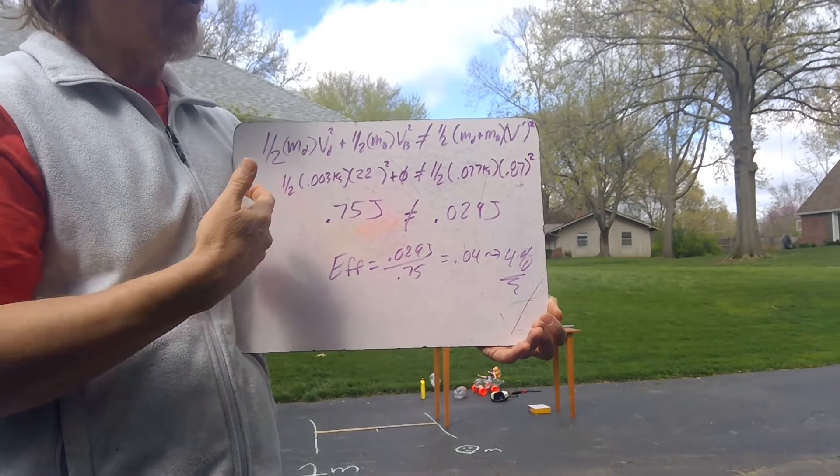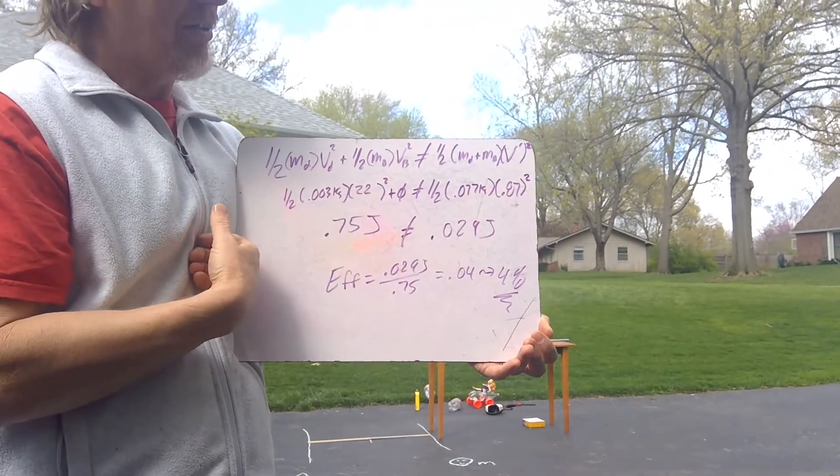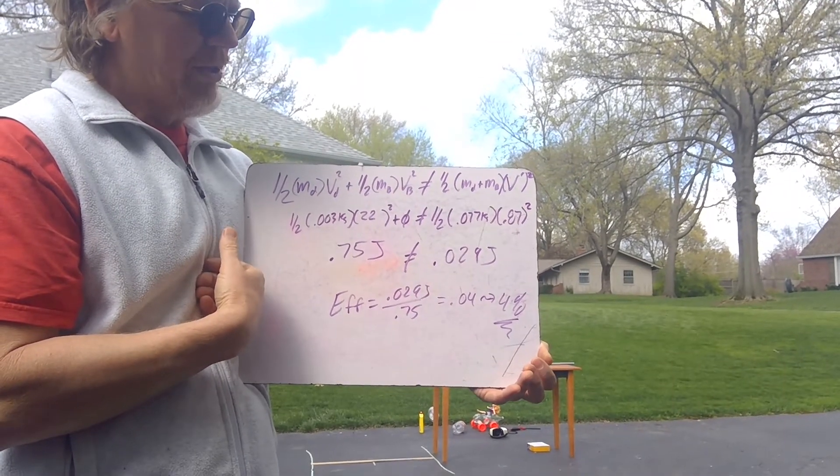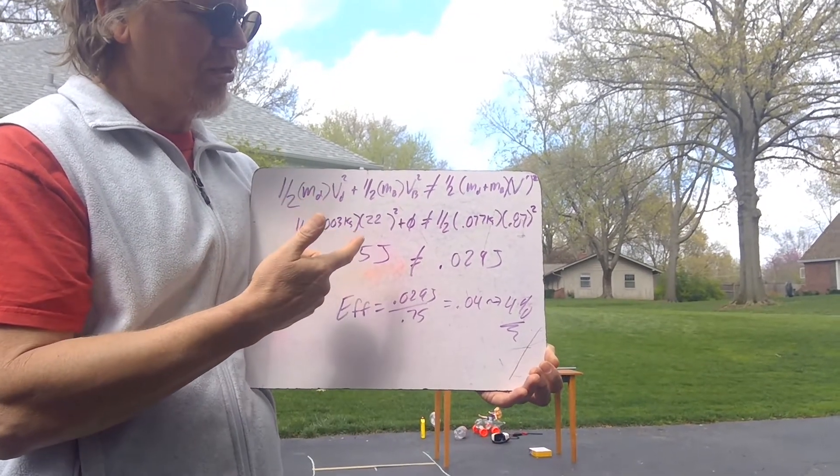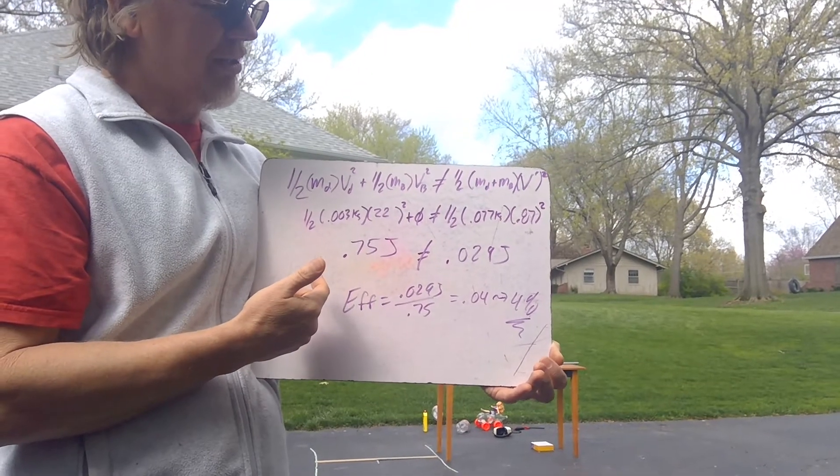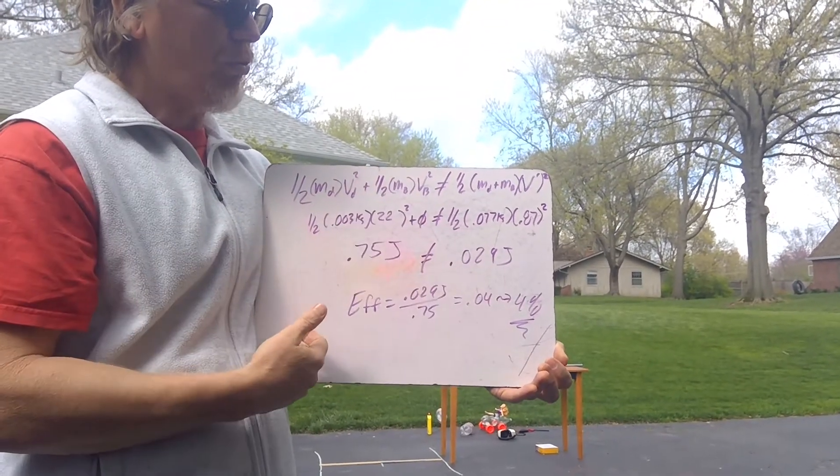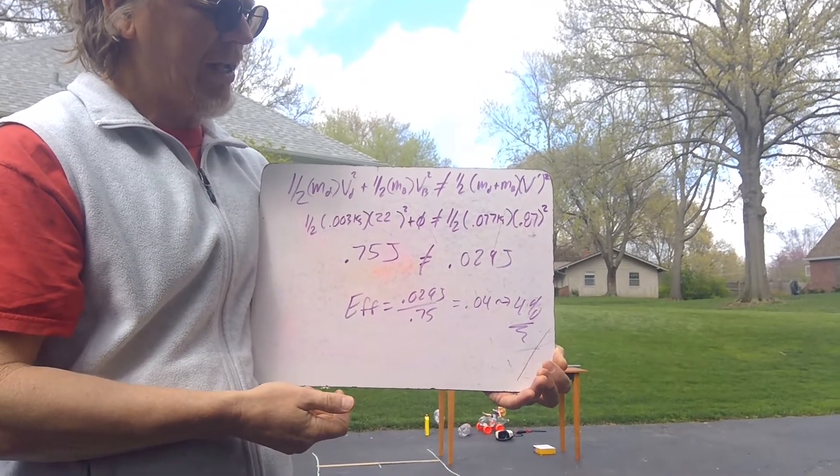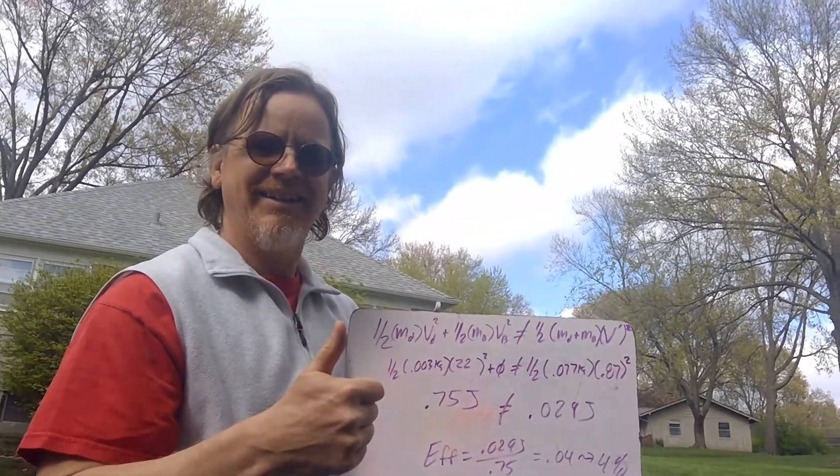So momentum is great to use to find velocities of things. The kinetic energy is not so good at finding velocities because you have a lot of energy in collisions lost to that thermal stuff. But scientists use both the law of conservation of momentum and the law of conservation of energy to talk about what happens in collisions, especially subatomic collisions. Because the subatomic collisions, they are elastic. So both of these work to find out what you have before and what you have afterwards in a collision. End. Done.